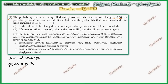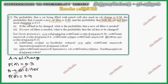The probability that it needs a new oil filter is 0.4. So B is the oil filter, and P of B is 0.4. Further, the probability that both oil and oil filter need changing is 0.15. So P of A intersection B is 0.15.